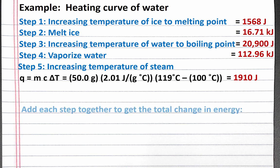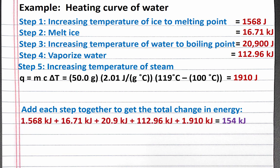The last thing we need to do is sum the energy for our five steps. We need to make sure we use the same units of energy for every step, so we'll convert to kilojoules. The 1568 joules for the first step becomes 1.568 kilojoules. We do the same conversion for our other steps where we changed temperature, and completing the addition, we get 154 kilojoules.